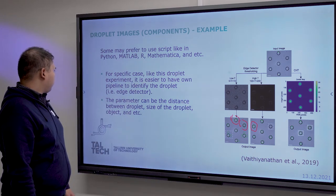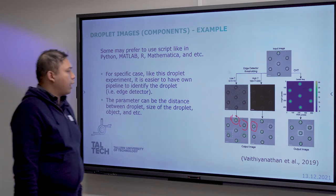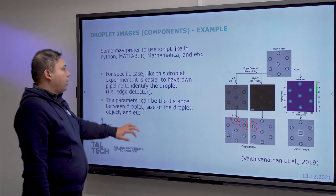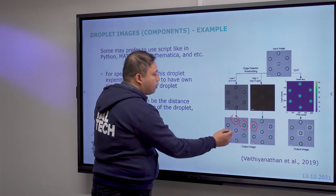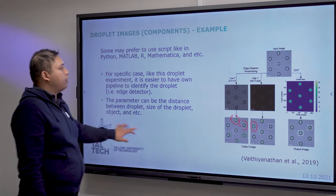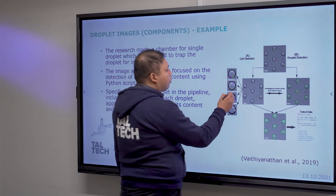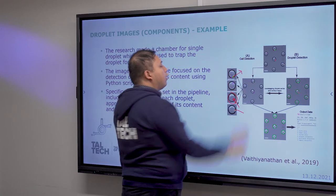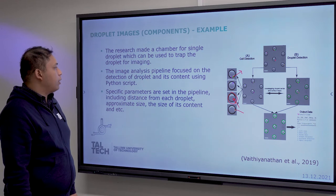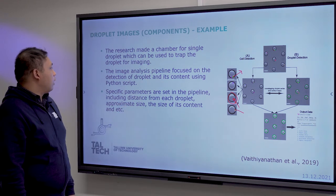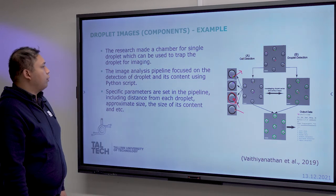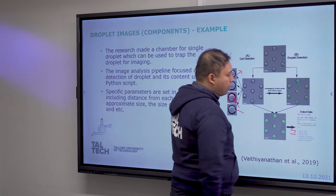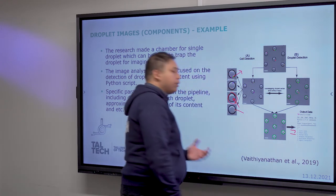Another example demonstrates edge-based discontinuity segmentation. After detecting droplets, the pipeline can also measure objects inside the droplets — for example, detecting blue and yellow-green objects encapsulated within droplets using a Python script. At the end of the workflow, they can define how many live cells and dead cells are encapsulated in a droplet.